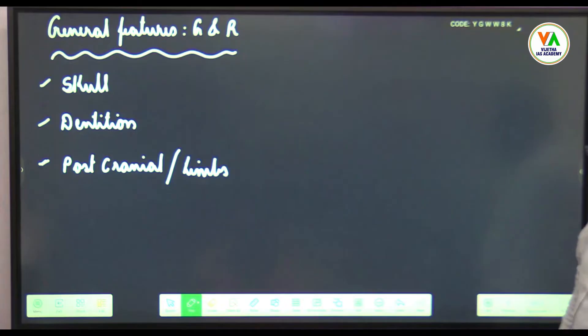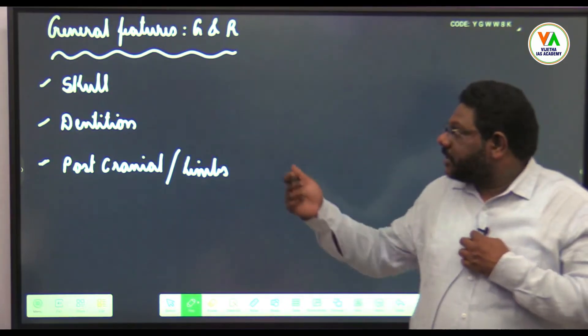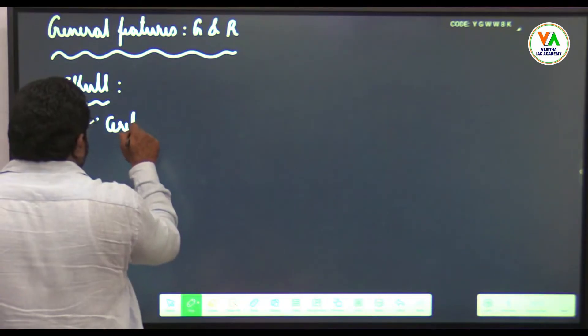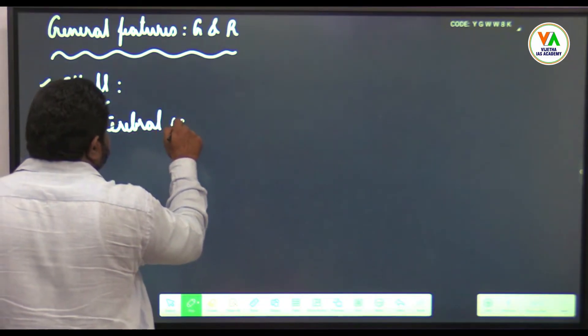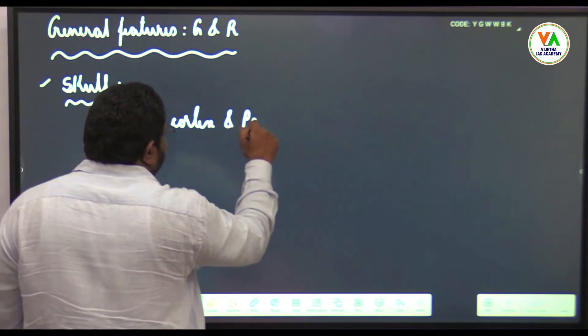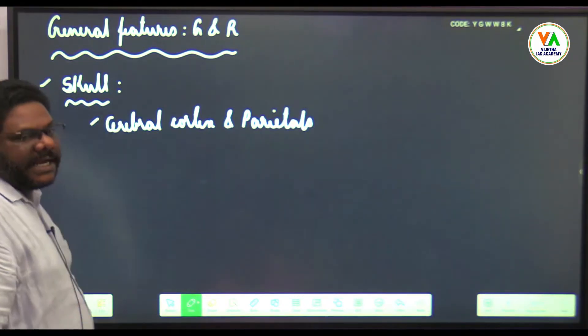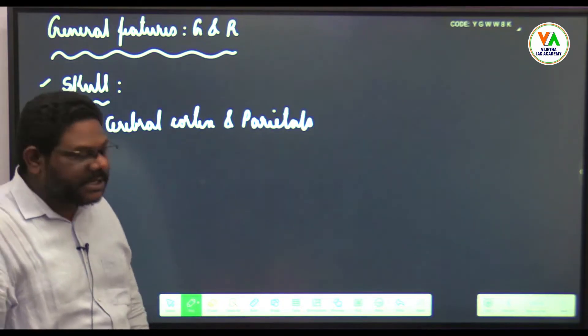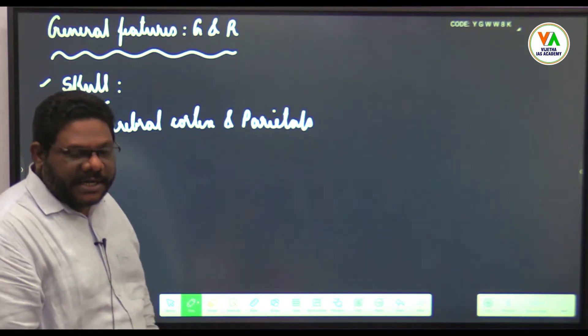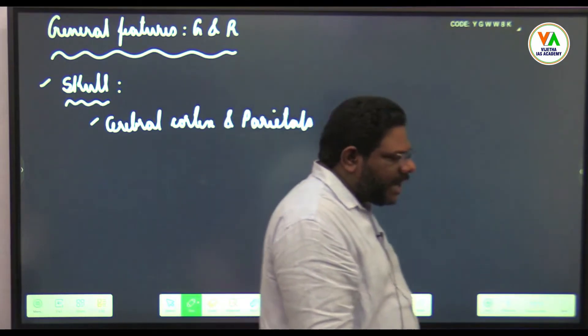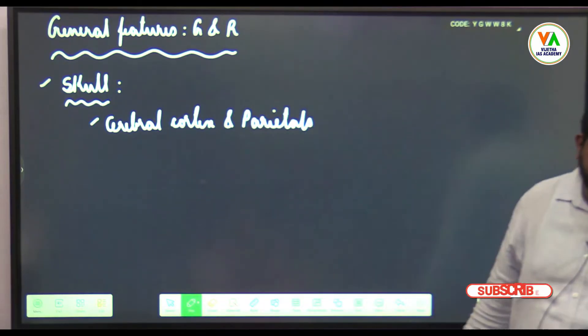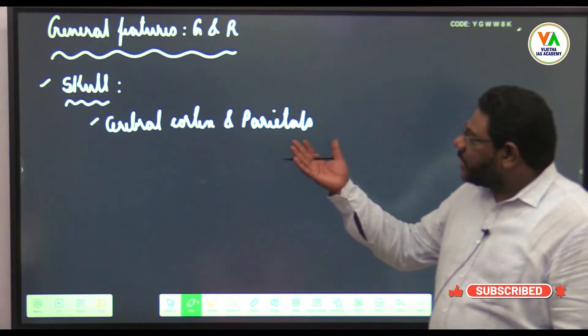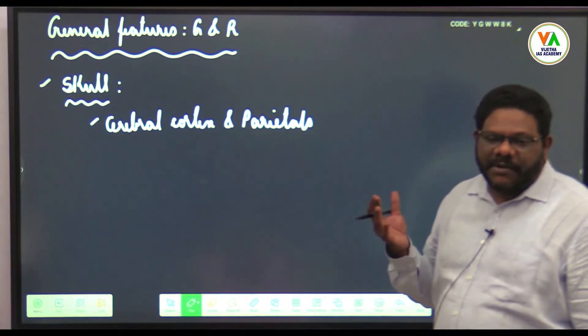Starting with the skull in both gracile and robust forms: cerebral cortex and parietals are well developed. Brain increased in size, and these enlarged cerebral cortex and parietals indicate they might have had some symbolic form of communication, as these areas are related to speech.